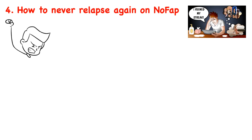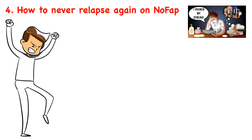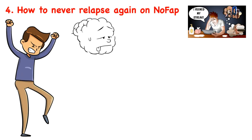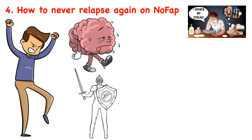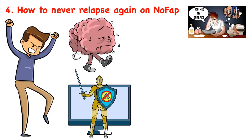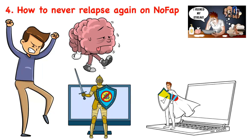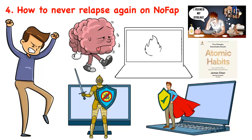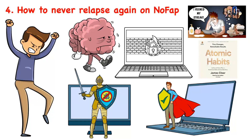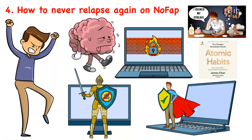I bet you have tried to quit adult content using your willpower alone and have failed, because the same thing happened to me multiple times. If you never strengthen your willpower, it's normal for it to be weak. This is why I strongly believe in using an adult content blocker while you practice NoFap. An adult content blocker works as a commitment device that prevents you from watching adult content and relapsing. In his famous book Atomic Habits, James Clear talks about the importance of using commitment devices to lock our behavior so we don't need to use willpower to follow through.